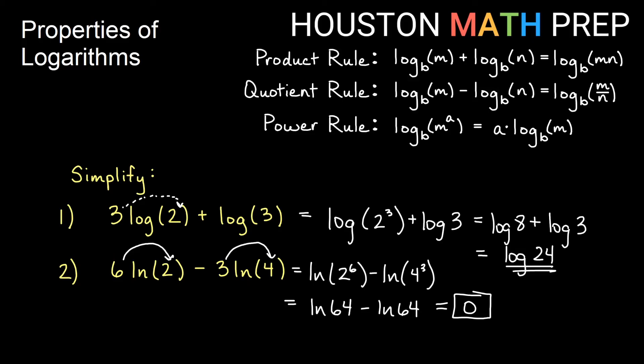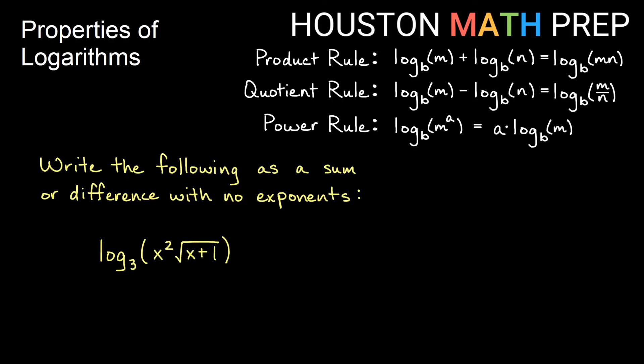Other than condensing logs into one logarithm, we may start with something complicated inside a log and want to analyze it by breaking it up into separate pieces. We call this expanding. We want to write a log as a sum or difference — using addition and subtraction with separate logs — and also with no exponents remaining.